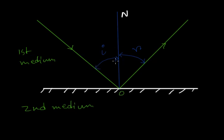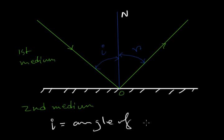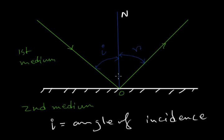The angle made by the incident ray with the normal drawn at the point of incidence is known as the angle of incidence, denoted as I. After suffering reflection, light returns to the first medium. The angle made by the reflected ray with the normal drawn at the point of incidence is known as the angle of reflection.